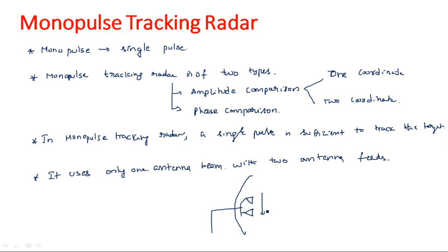If the two feeds are arranged in one direction it covers vertical movement; if in the other direction it covers horizontal direction. So monopulse tracking radar uses a single pulse with two different antenna feeds - this feed releases a signal and the other also releases a signal. Internally there are two feeds generating two different signals.